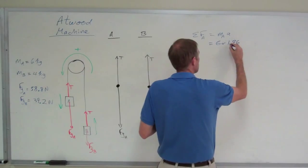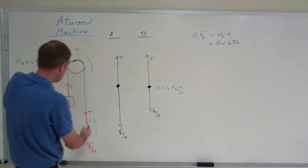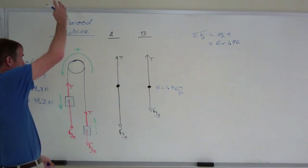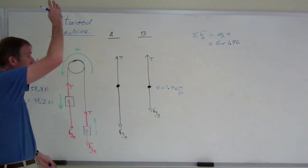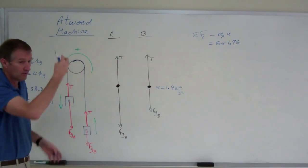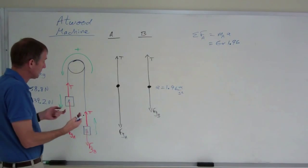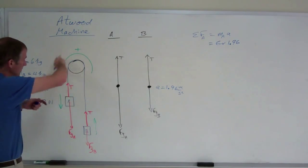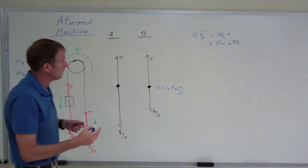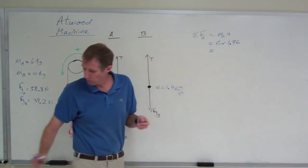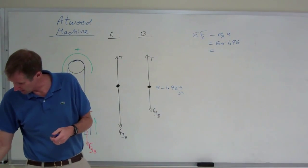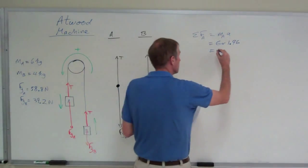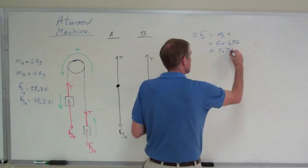But I'm going to still just leave it as a positive acceleration, because the system acceleration is that way, and I'm saying that that way is positive. When B goes up, A goes down, that's the positive direction. I know that's a little weird because it changes as it goes here, but that's the way we deal with it. 6 times 1.96 is 11.76 newtons.